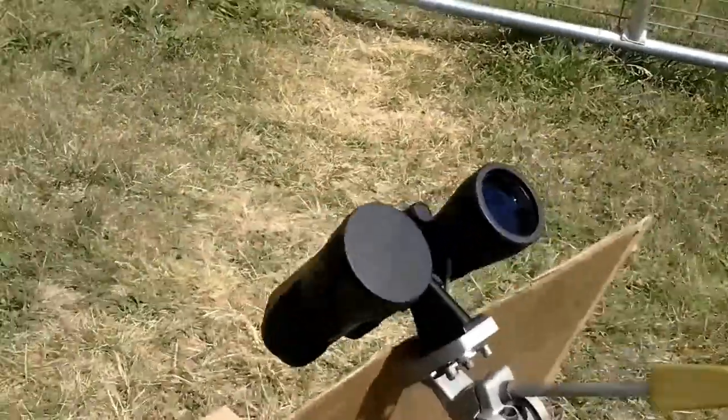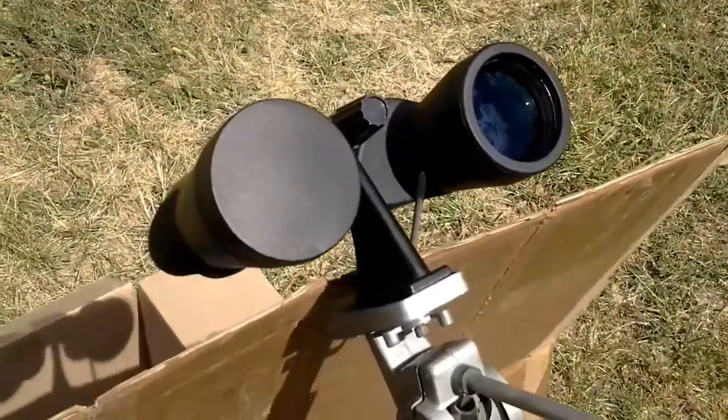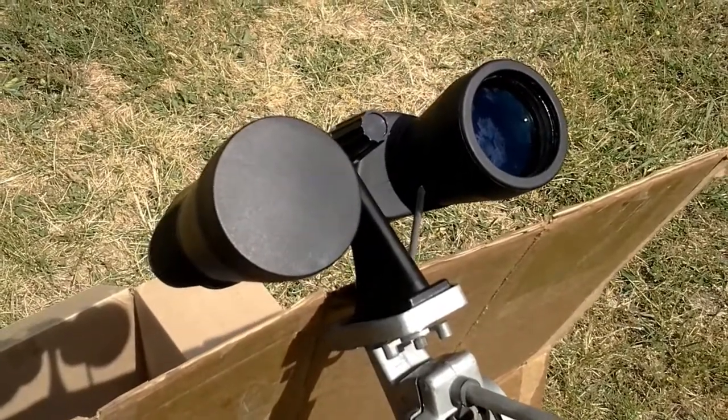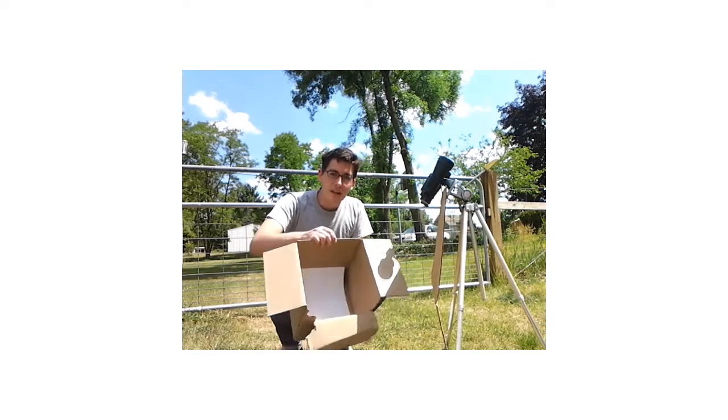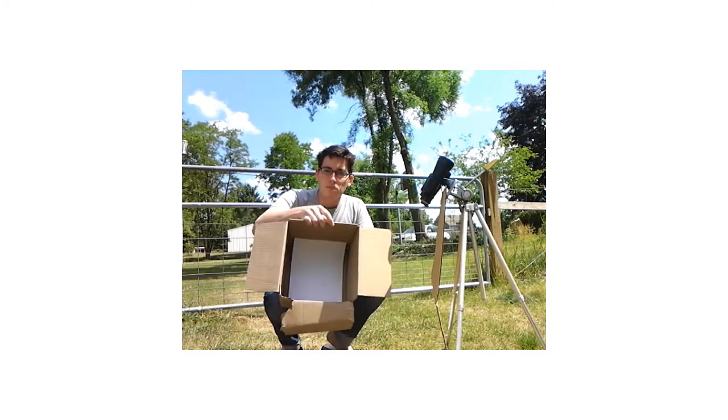I put them on a tripod and I have one side covered. So what it's doing right now as the sun comes back out is the sun is entering the lens of the binoculars and is projecting into this box. Inside the box I have a piece of white paper to view the picture on.